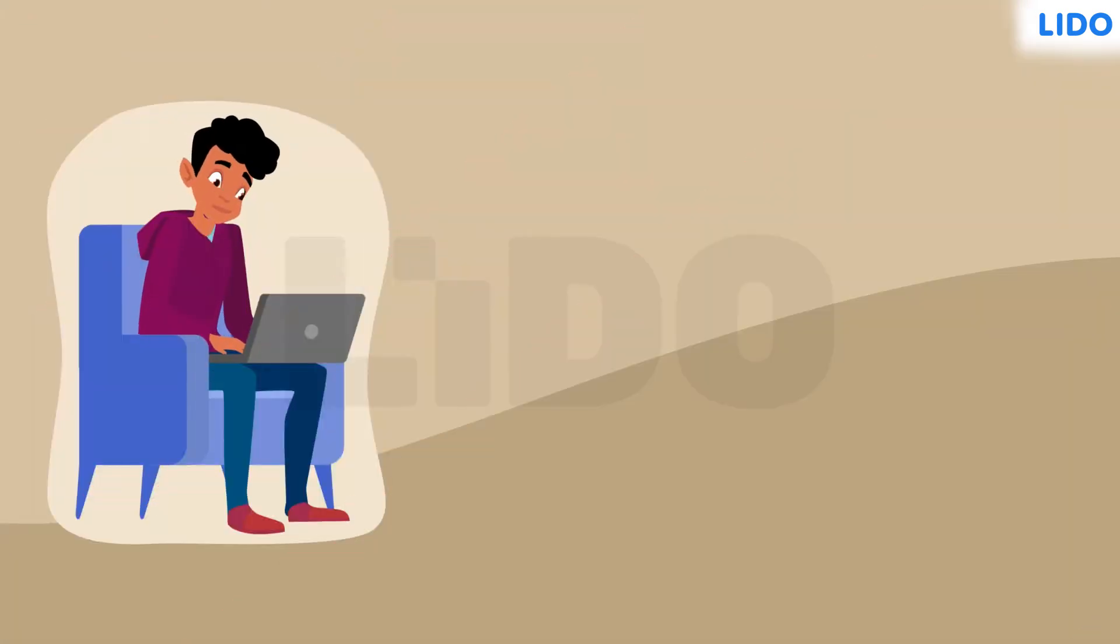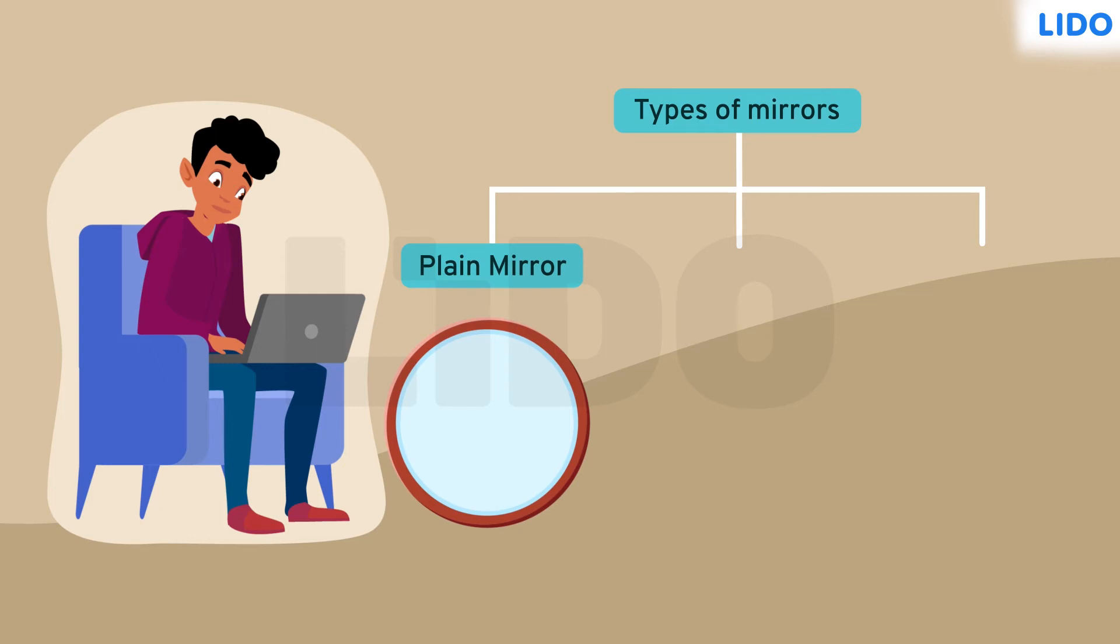Rohan went back home wondering how can a mirror magnify the image. He searched on his dad's laptop and found out that there are three kinds of mirrors: the plain mirror which we normally use, a convex mirror, and a concave mirror.